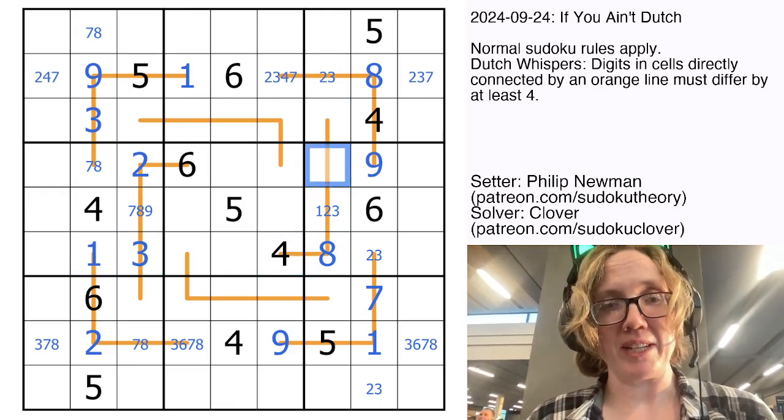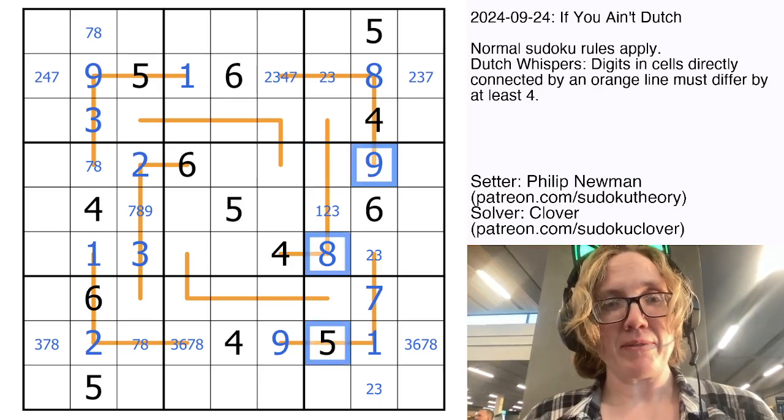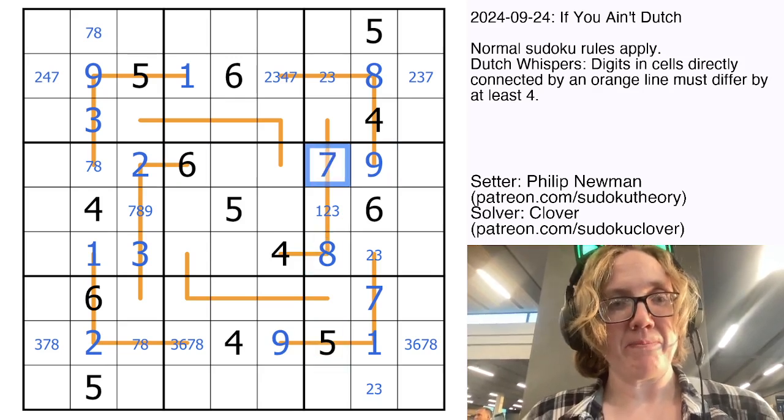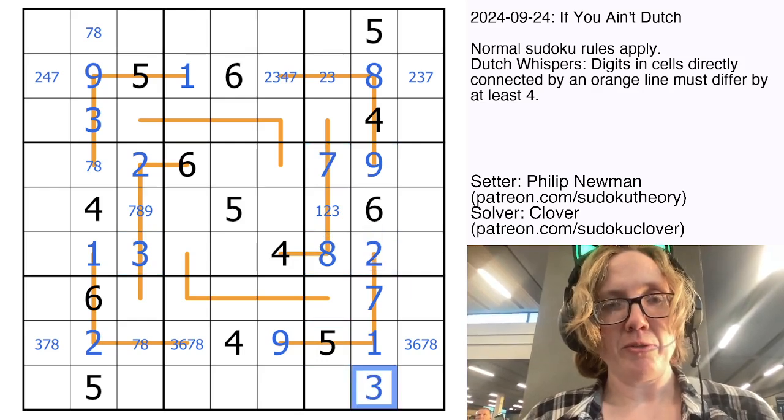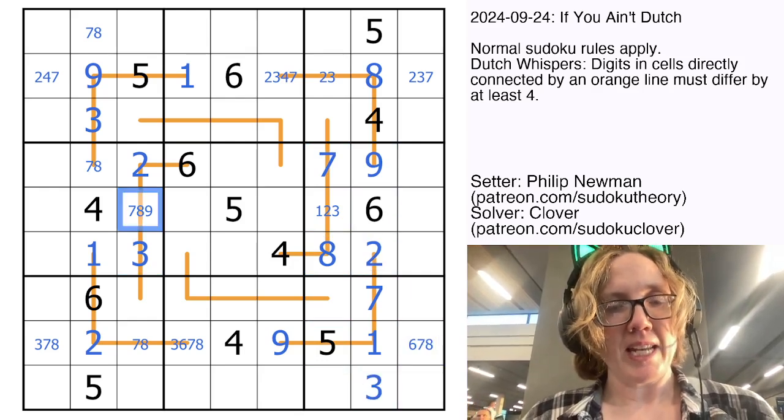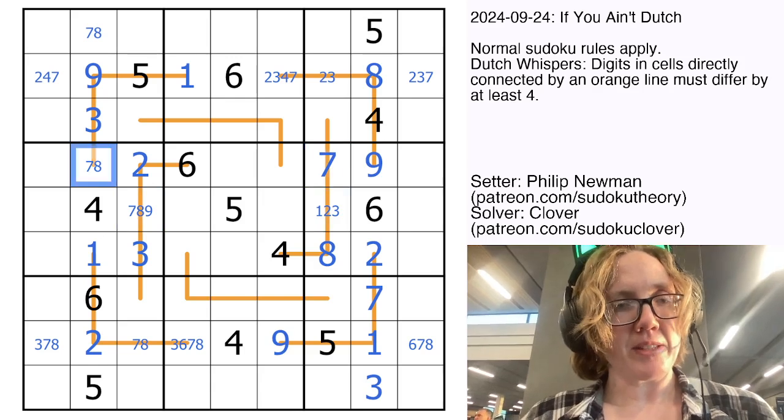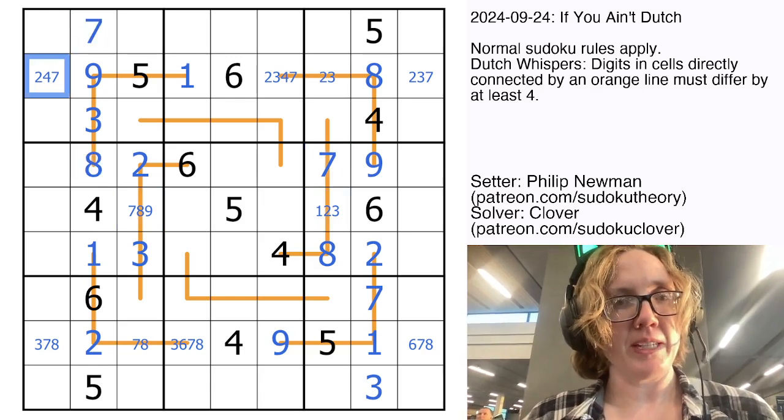And because this is a highly symmetrical puzzle we're going to have the same thing going on over here. Here we need a high digit 5, 6, 7, 8, or 9. But we can't use 5, 6, 8, or 9 so we're going to have to use 7. The 3 will resolve this 2 and resolve this 2, 3 pair. And the 7 will resolve this into an 8 and resolve this.